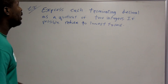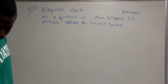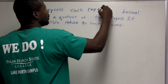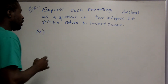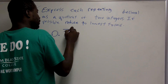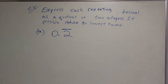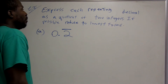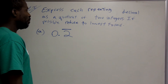Now let's look at repeating decimals. We're going to write repeating decimals as rational numbers in lowest terms. Let's try 0.2 repeating — the number 0.2 with 2s repeating forever — and change it into a quotient of two integers. The first thing we do is name our number n.